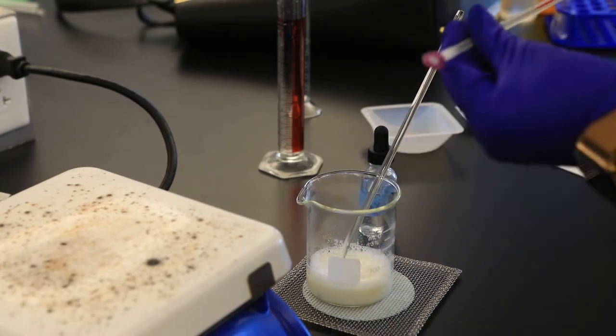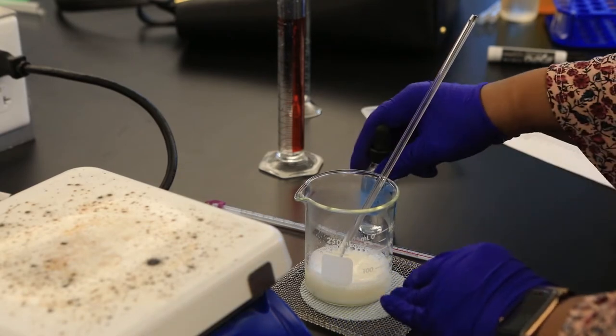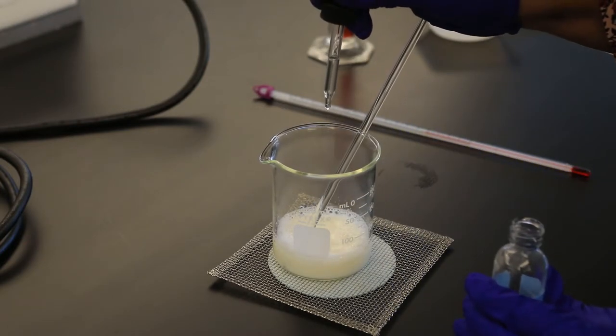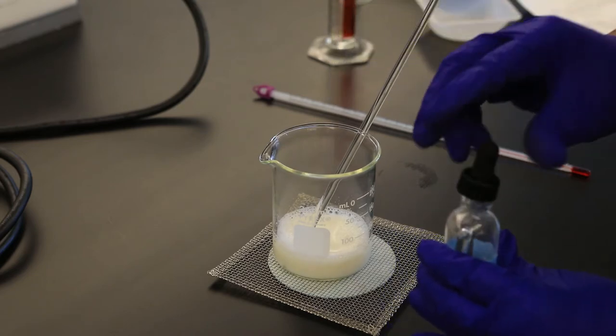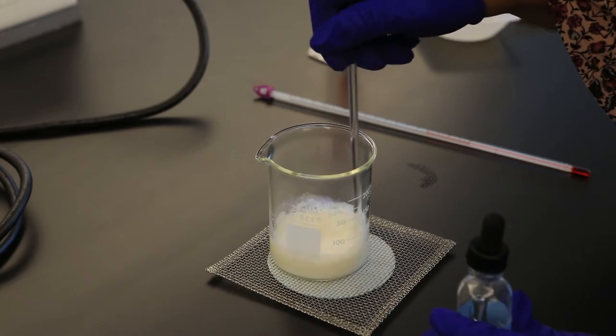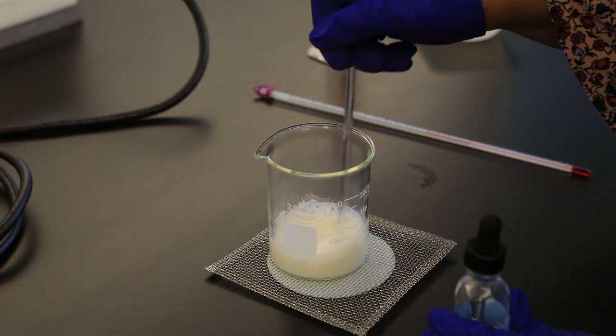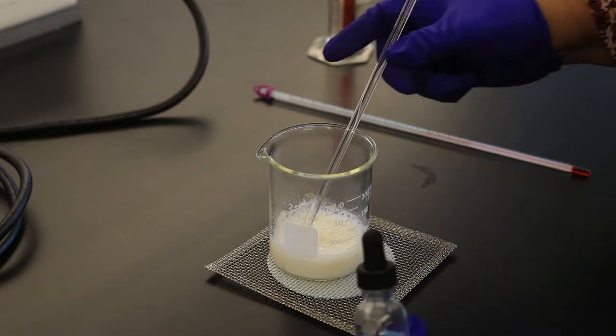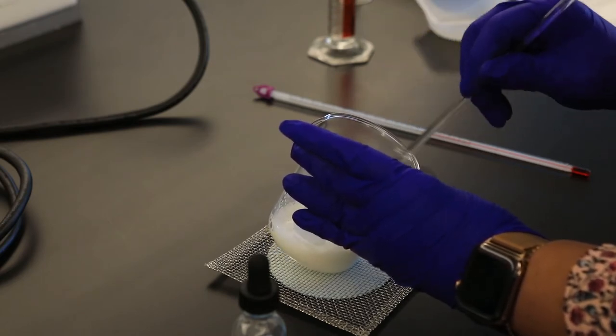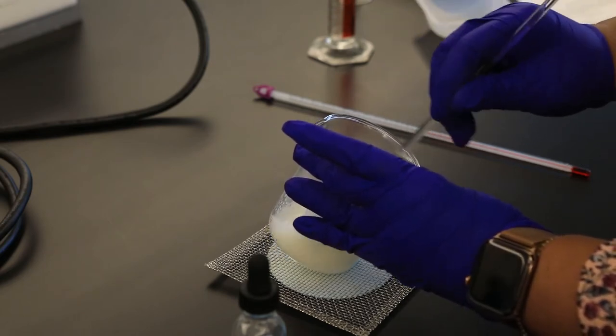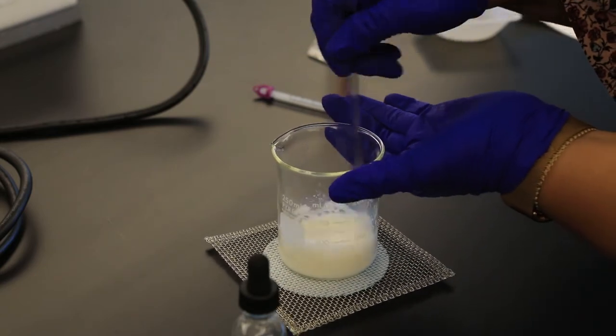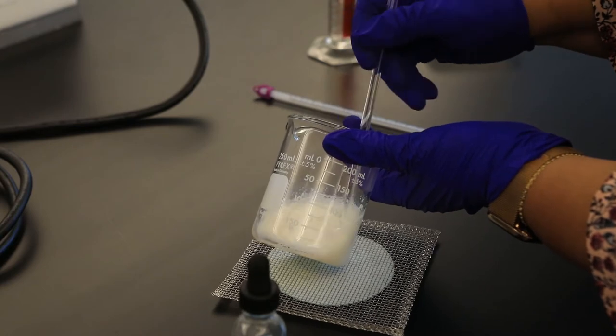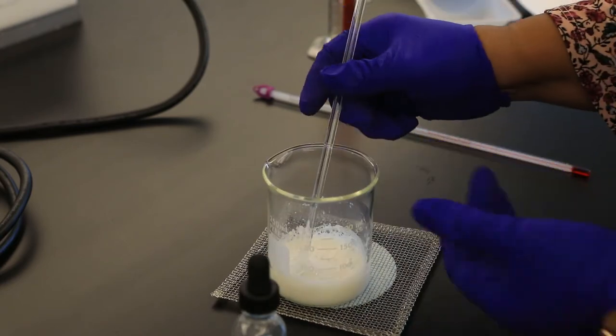I'm going to remove our thermometer and start adding the acetic acid drop-wise, no more than about 5 drops or so each time. I'll stir and allow the solid to form. The solid that is forming is actually casein. We don't want to add too much acetic acid, so as soon as no additional solid is forming, I'll stop adding the acetic acid.